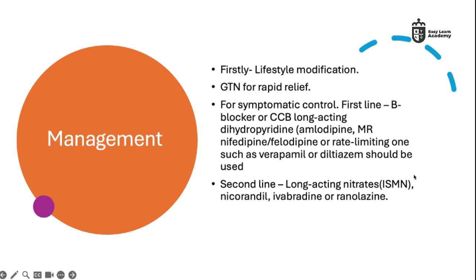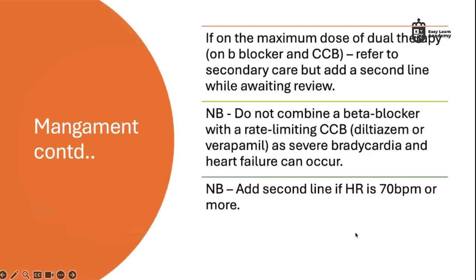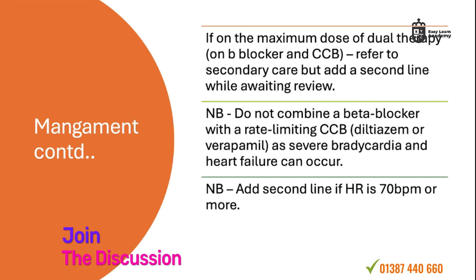If the patient is on maximum doses of both a beta blocker and a calcium channel blocker and symptoms still persist, you need to refer to secondary care. But before referring, you could start one of the second-line treatments — long-acting nitrates, nicorandil, ivabradine, or ranolazine — while the patient is waiting to be reviewed for coronary angiography. It's important to maximise dual therapy before starting second-line treatment.